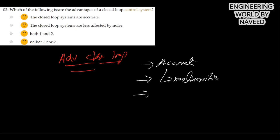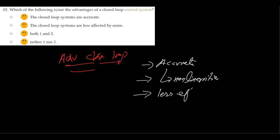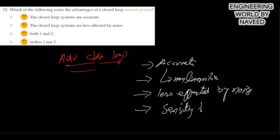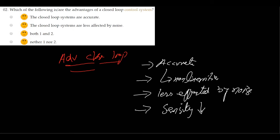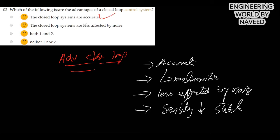The closed loop system is less affected by noise. The last advantage is that the sensitivity of the system may be small, due to which the system will always be stable. So the correct option is both one and two — closed loop systems are accurate and less affected by noise.